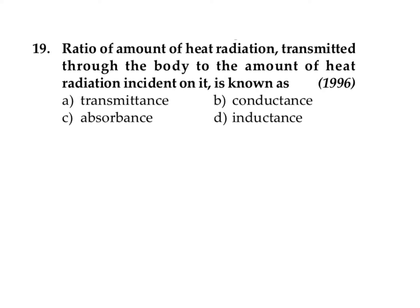The ratio of amount of heat radiation transmitted through the body to the amount of heat radiation incidence on it is known as: the ratio of amount of energy which is transmitted through the object divided by the amount of energy incident will give the value of coefficient of transmission, or the value of transmittance.